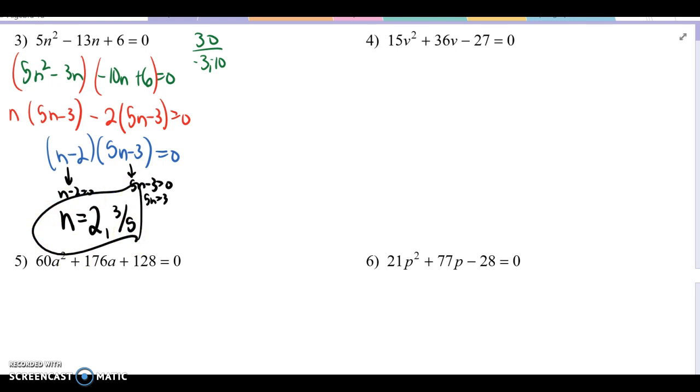Problem number 4. One thing I noticed at the beginning of this one is that these are much bigger numbers. 15 times negative 27 is huge. I don't want to work with huge numbers if I have to. And in fact, we don't have to because all three of these terms for the first time have a GCF. 3 goes into all of them. So if we factor out that 3, it would become 5v squared plus 12v minus 9 equals 0. And these are single-digit numbers, at least the outside 2, compared to the triple-digit numbers that we started with.